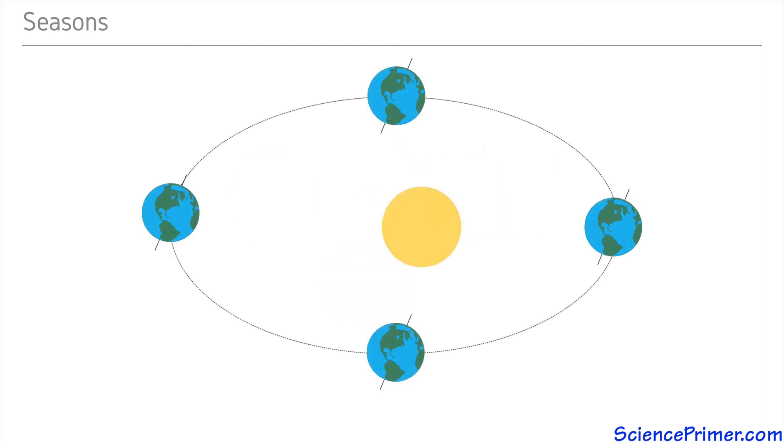These two extreme points where the angle of the tilt puts 23 degrees of latitude closest to the sun are called the solstices. They occur once per year for each hemisphere. The southern hemisphere's summer solstice is the northern hemisphere's winter solstice, and vice versa. The halfway point between each solstice is called the equinox.